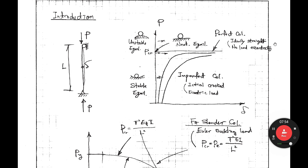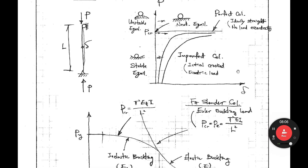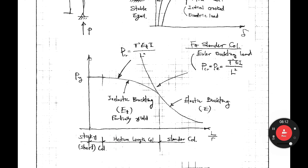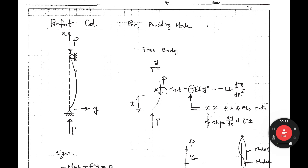If there is a larger initial deformation, the curve looks like this. We call it an imperfect column — initially crooked means initially some deformation. A perfect column is ideally straight with no load eccentricity. We also cover in chapter two this column strength curve: for very short columns, failure is by yielding. For medium-length columns, the column buckles inelastically — that is the inelastic buckling range. For slender columns, the behavior is elastic buckling.